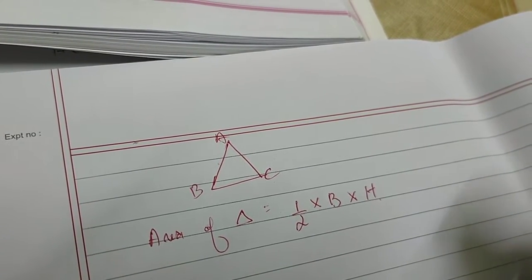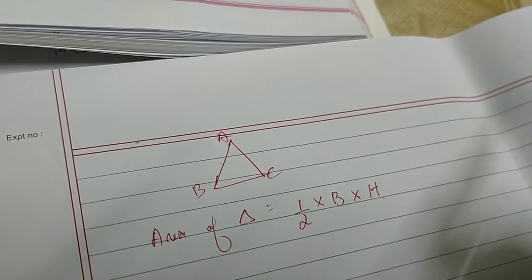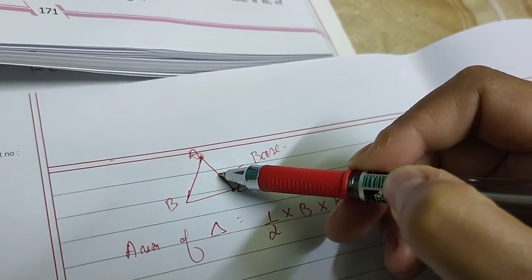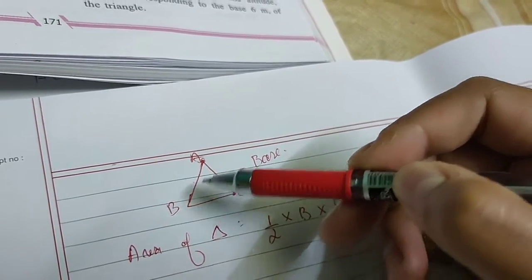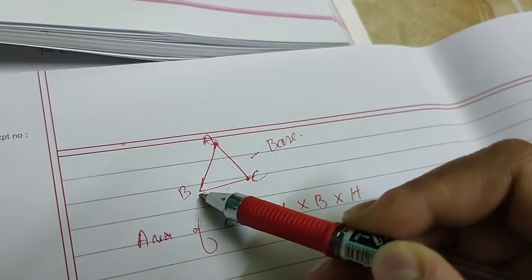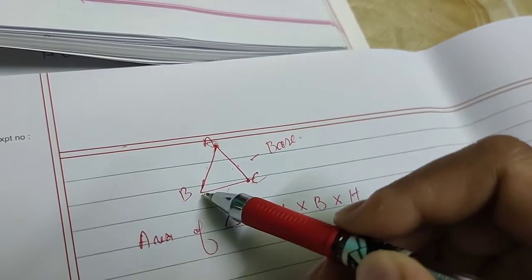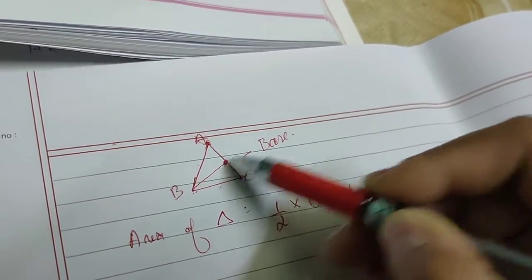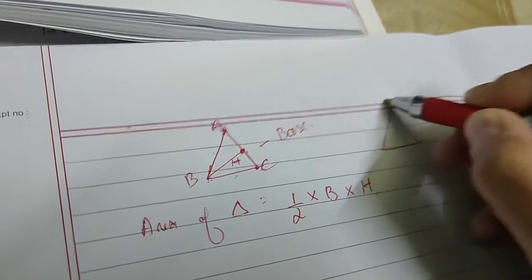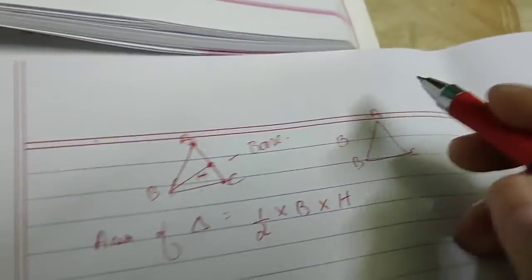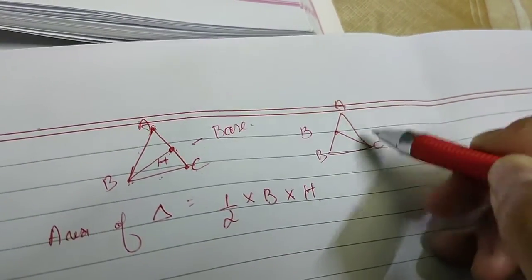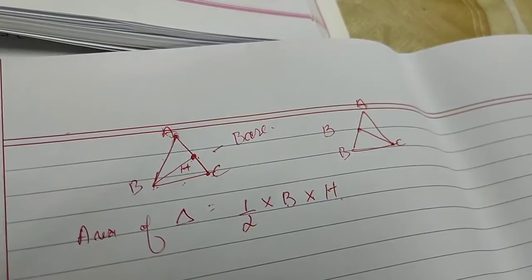If you consider AC to be the base, the opposite vertex is B. From that vertex, if a perpendicular is drawn to the base, that length is considered the height of the triangle. Similarly, if you consider AB to be the base, the perpendicular from the opposite vertex to AB gives the height of triangle ABC.